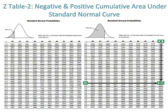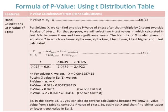Formula of p-value using t-distribution table: subtracting x from alpha_1 is p-value for one tail test. For solving x, we can find one side p-value of t-test, after that multiply by 2 to get two side p-value of t-test. For that purpose, we will select two t-test values in which calculated t-test falls between them and two significance levels.